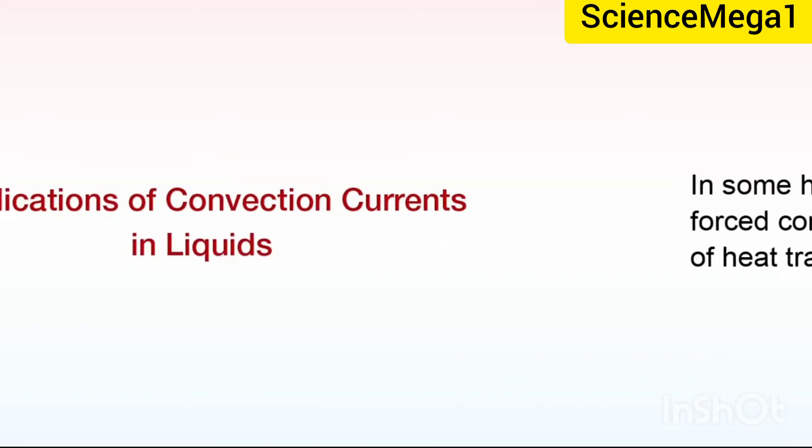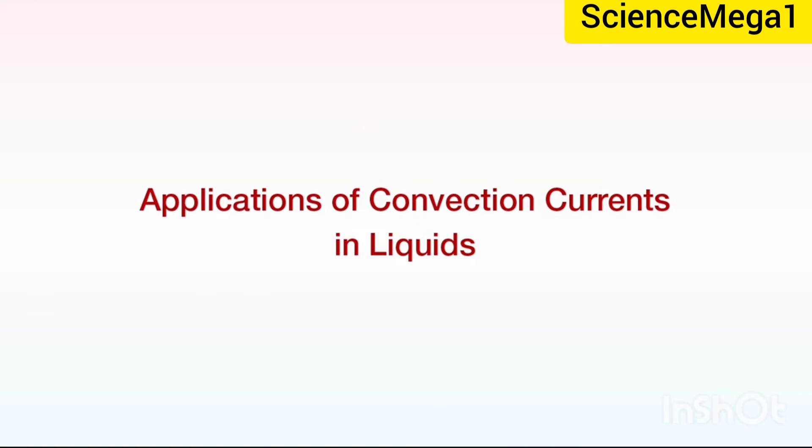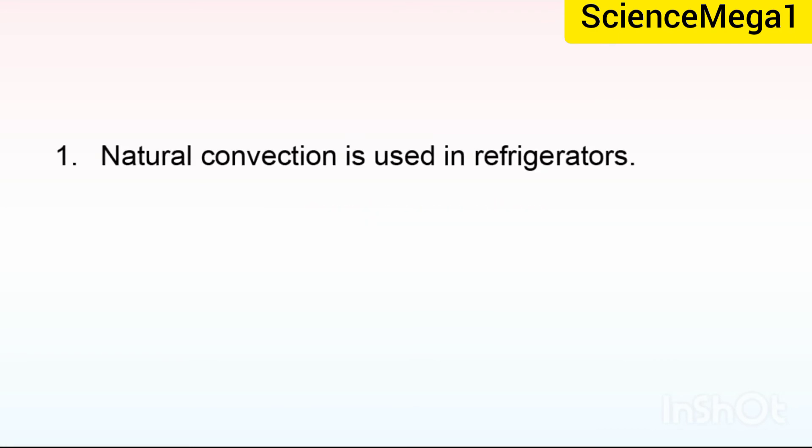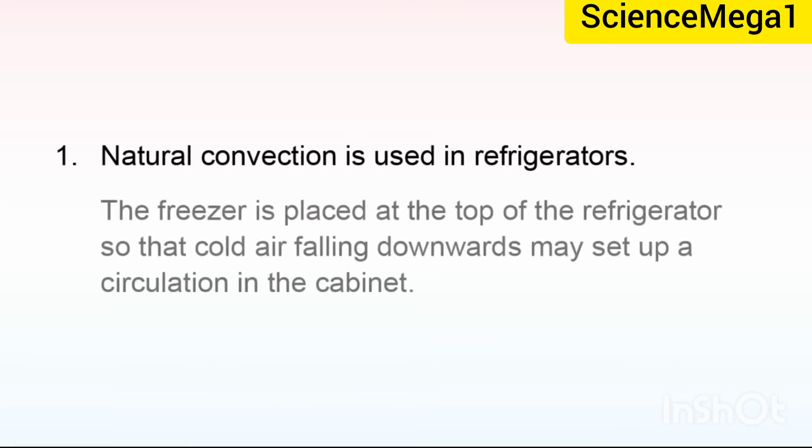We now move on to applications of convection current in fluids. Starting with natural convection. Natural convection is used in refrigerators. The freezer is placed at the top of the refrigerator so that cold air falling downwards may set up a circulation in the cabinet.